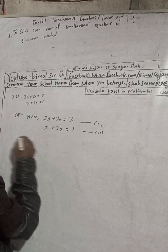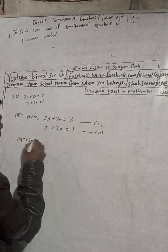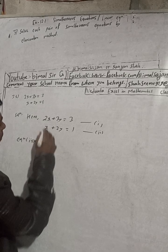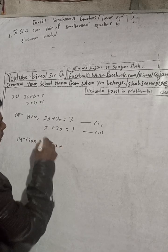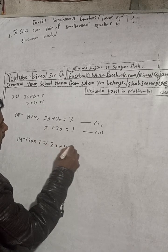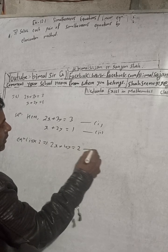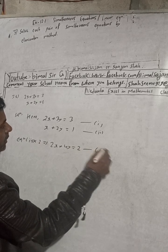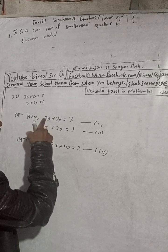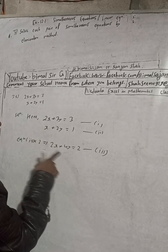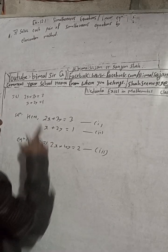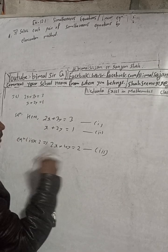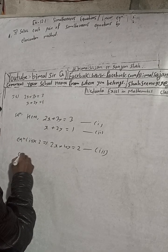So multiply this equation 2, equation 2 into 2. This will be what? 2x into 2, 4y is equal to 1 into 2, which is 2. This equation 2 becomes now equation 3. Now you can see that equation 1 and 3 have same coefficient, coefficient 2, 2. So for the plus plus, we have to now subtract.